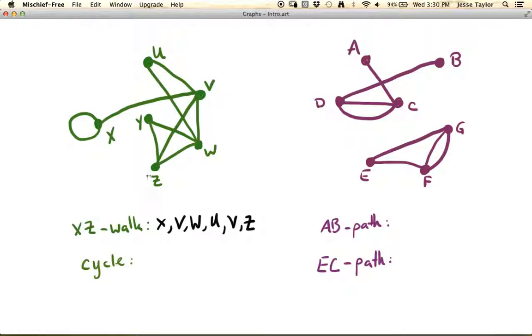So this is an x-z walk. We went from x to v to w to u to v to z. So it's just a sequence of vertices. As opposed to a path, let's look at, say, an AB path. The only difference between a path and a walk is, notice over here that we repeated this vertex v. We visited v twice, and that's not allowed in a path. So, for example, our AB path might be A-C-D-B. Now, it's worth noting here that this AB path is also an AB walk. So a walk just means that you're allowed to repeat. A path means that you cannot repeat.